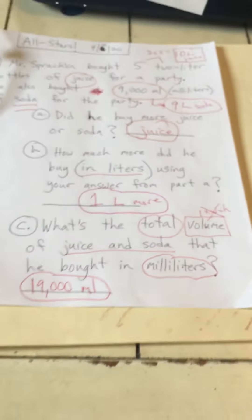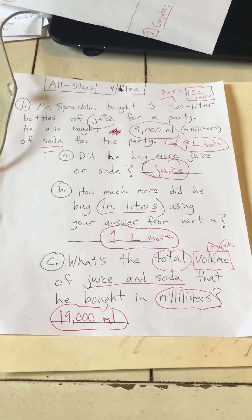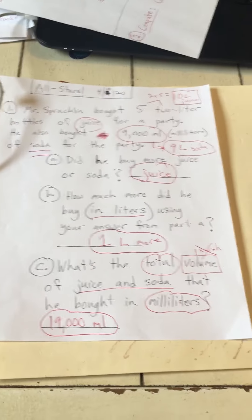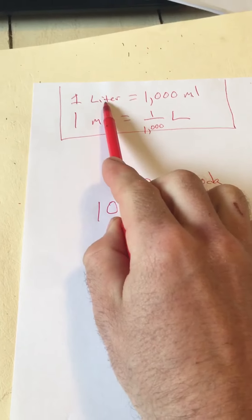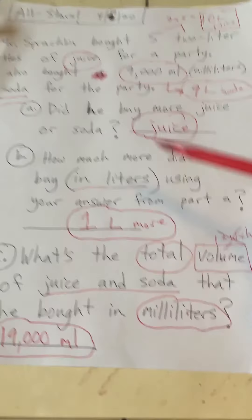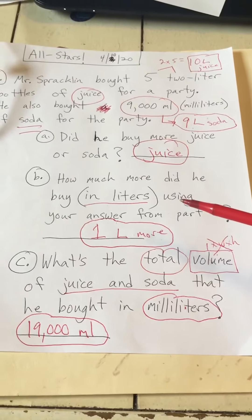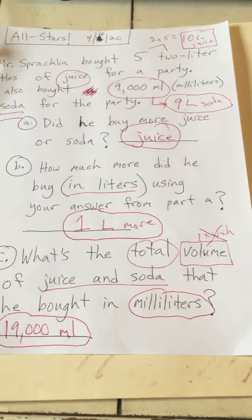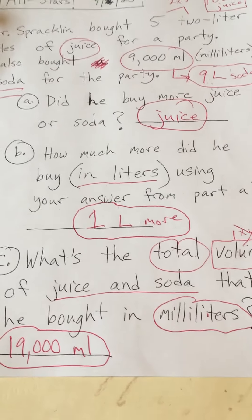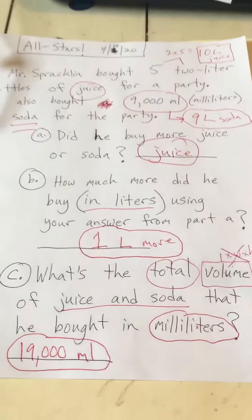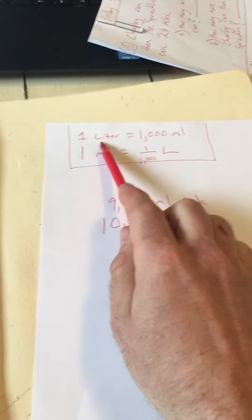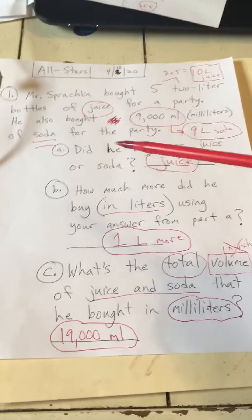19,000 milliliters is the correct answer. Give yourself some snaps if you got those — they were tricky. The reason they were especially tricky: if you didn't know that one liter is a thousand milliliters, you wouldn't have known how to do any of this problem. On the MCAS, they'll tell you how many feet are in a mile or yards in a mile, but they are not going to tell you how many milliliters are in a liter.